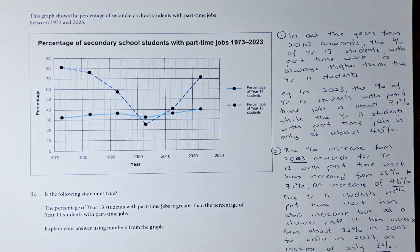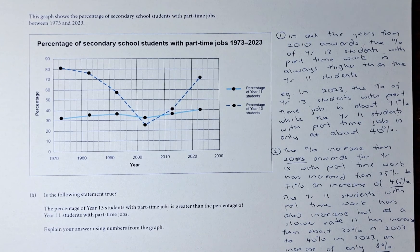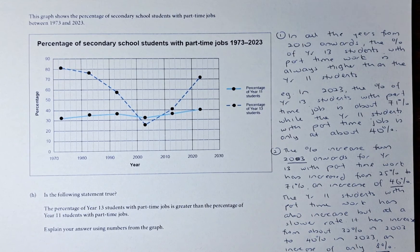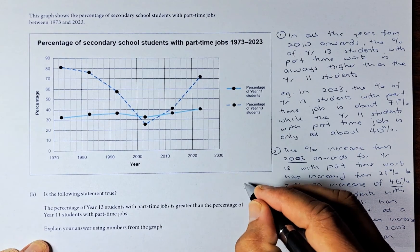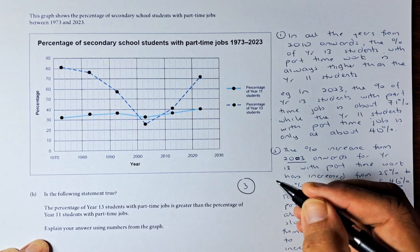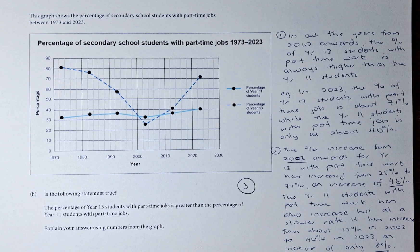This again shows that Year 13 has more part-time jobs than Year 11. This is the basis of statistics — you need to argue your case and give evidence. If you can answer with two points like these you will get Outcome number 3. We'll look at the next question, question 2, in the next video. Cheers everyone and have a good day.